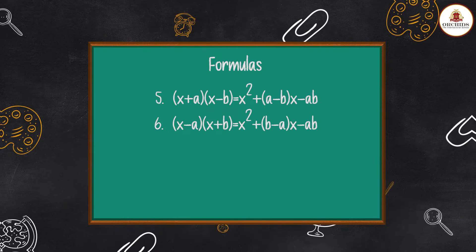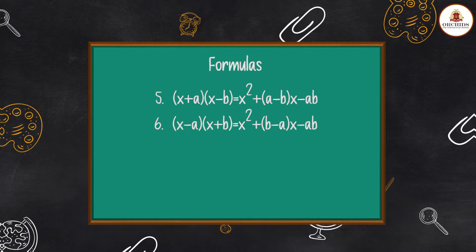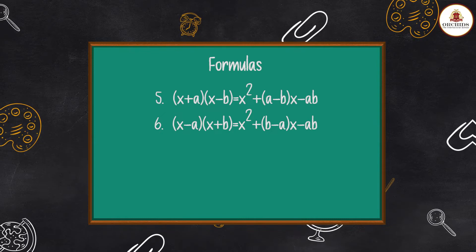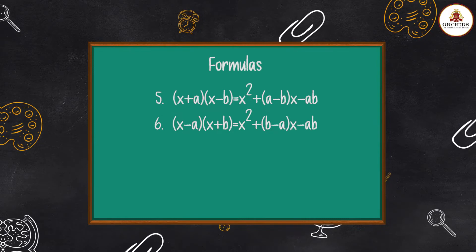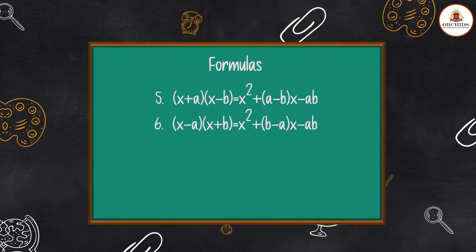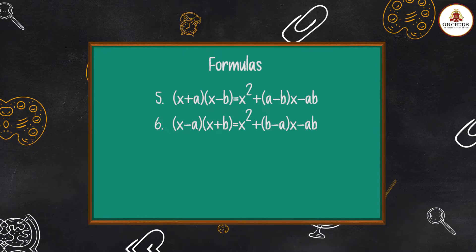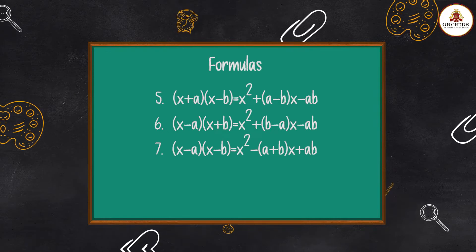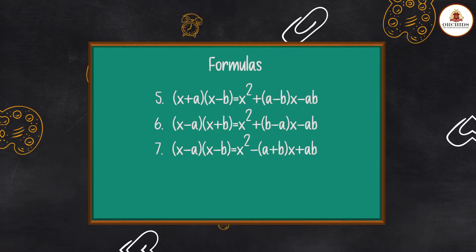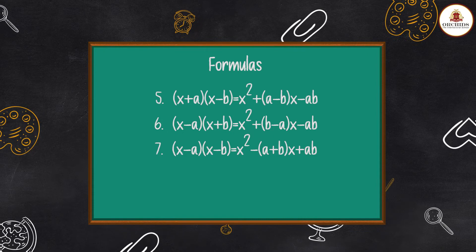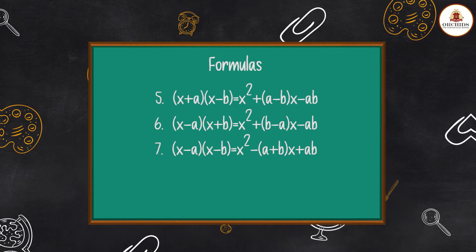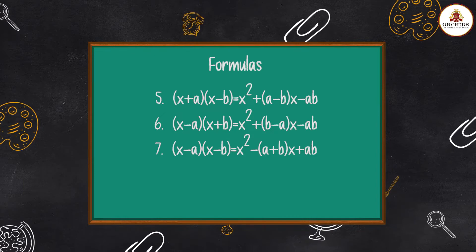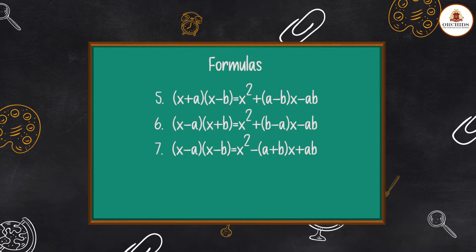6. (x − a)(x + b) = x² + (b − a)x − ab  7. (x − a)(x − b) = x² − (a + b)x + ab